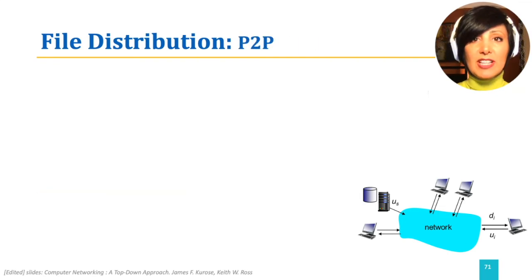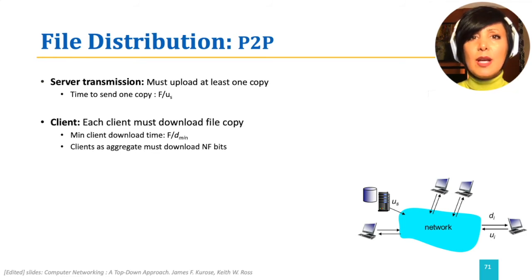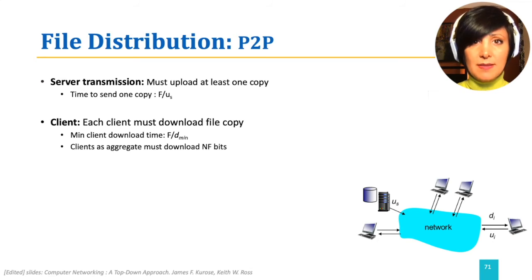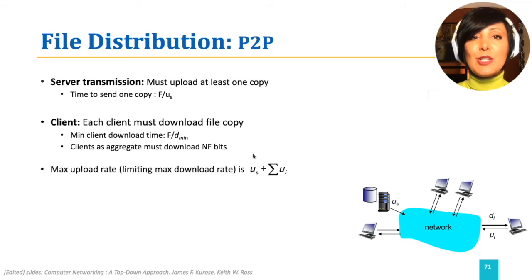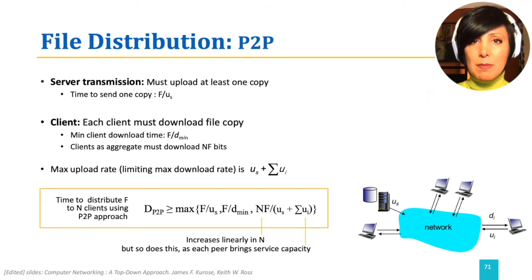Now, the peer-to-peer architecture. At the beginning, only the server has the file, so the server needs to upload at least one copy. Each client must download the file, and the longest download belongs to the client with the minimum download capacity. But each client, after their download, can contribute to subsequent uploads. Therefore, some of their upload capacity helps reduce the overall upload time. The lower bound can be approached when each peer starts distributing a bit as soon as it receives one. In reality, chunk-level contribution is made, so we are aiming at an approximation here.